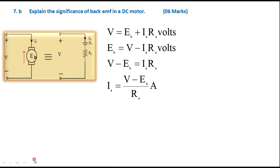Question 7b asks: explain the significance of back EMF in a DC motor. Here I am explaining with the help of an electrical model of a DC motor. The motor is represented by the armature and applied voltage V. Because of the generating action in the motor, we have a back EMF Eb, whose direction is given by Lenz's law — it is exactly opposite to the applied voltage. Applying KVL: V = Eb + IaRa, therefore Eb = V − IaRa, and Ia = (V − Eb) / Ra. Also, Eb = ΦZNP / (60A).